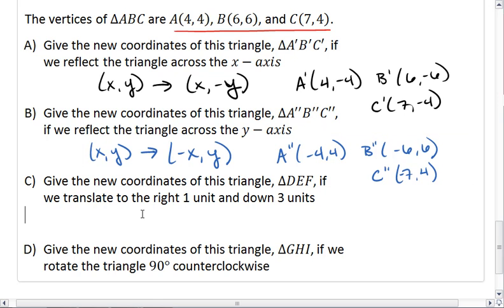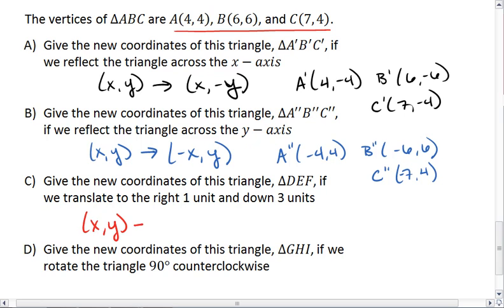So when we translate, then each ordered pair, since we're translating in this one to the right by 1 unit, the x-value is increased by 1. Down 3 units, our y-value is decreased by 3.